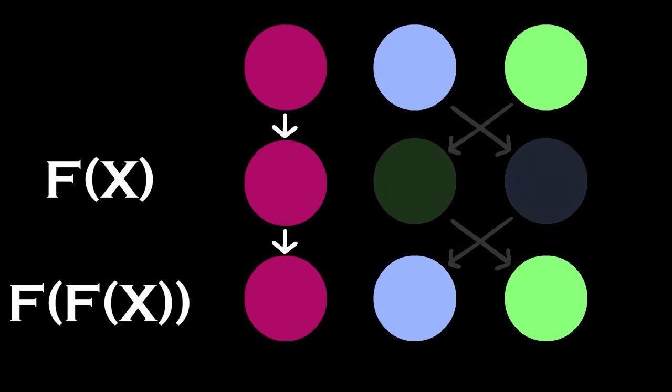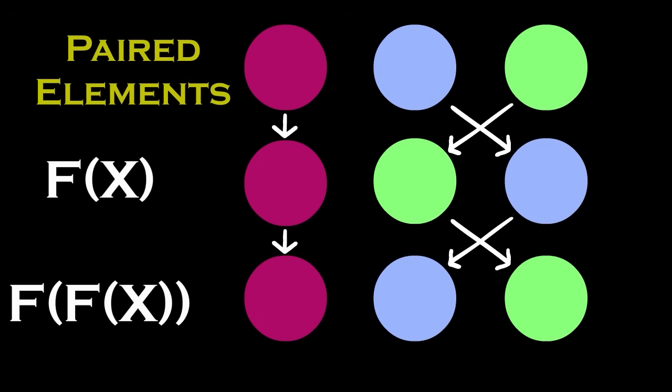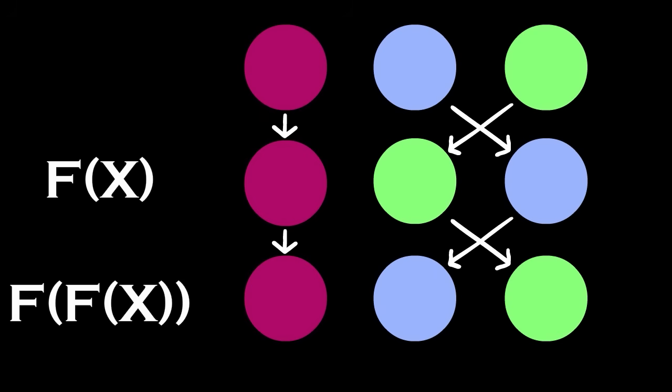We call these fixed elements. You could also have two elements that swap with each other. For example, blue and green swap with each other, which means that if you apply the function again, you get the elements back in their original position. It should be fairly clear that these are the only two mappings you can have, but I recommend you pause here to make sure you understand.